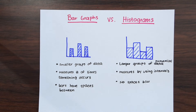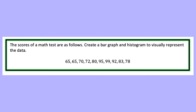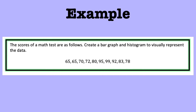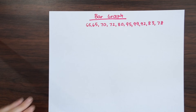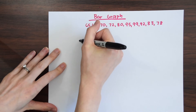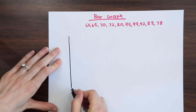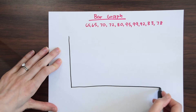Now we know a little background about how bar graphs and histograms are different, so let's go into our example. It says the scores of a math test are as follows — create a bar graph and histogram to visually represent the data. So first let's make a bar graph. We're going to set up an X and Y axis like this.